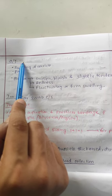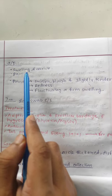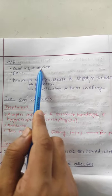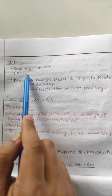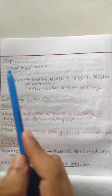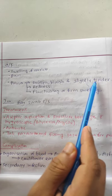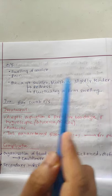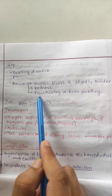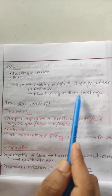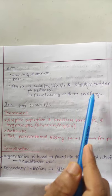The clinical features of Hematoma Auris include swelling of the auricle, pain, and the swelling appears bluish and slightly tender with redness. There is also fluctuating swelling.